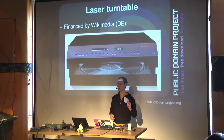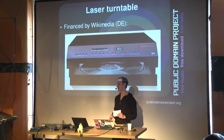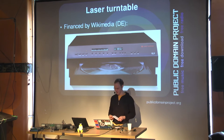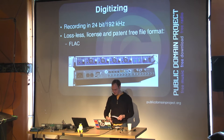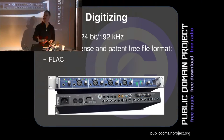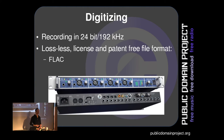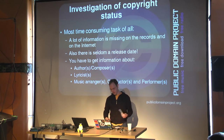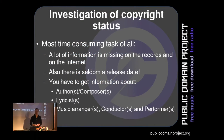Another limitation of the laser turntable is that it can only digitize black records — no picture discs, which were already invented in the 1930s and 40s. We're very proud to have this machine and grateful that Wikimedia Germany bought it for us. We digitize everything as lossless FLAC files, recording 80-year-old records at 24-bit and 192 kHz, to capture as much information as possible from these old recordings.